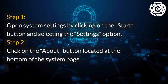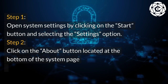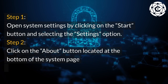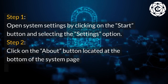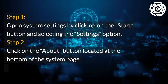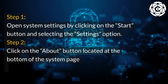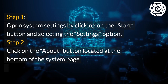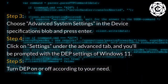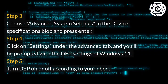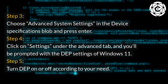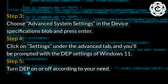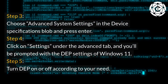Step 1: Open System Settings by clicking on the Start button and selecting the Settings option. Step 2: Click on the About button located at the bottom of the system page. Step 3: Choose Advanced System Settings in the Device Specifications section and press Enter.